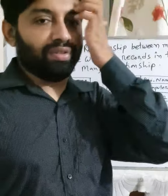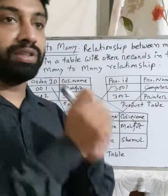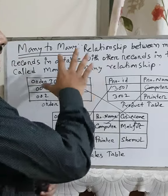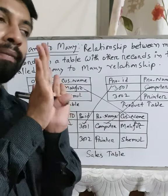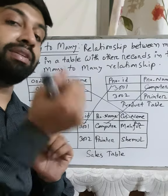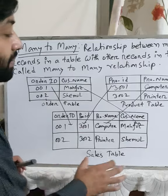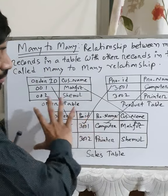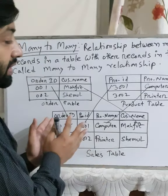Now for many-to-many: if we find a match between multiple records in one table with multiple records in another table, we call it a many-to-many relationship. To represent this, we use a third table called a junction table. Here, an Order Table and a Product Table are each connected to this junction table, which links the two tables together.